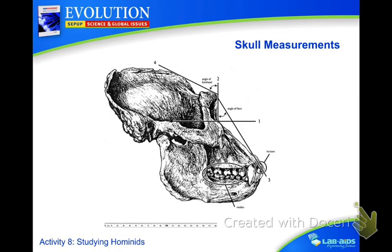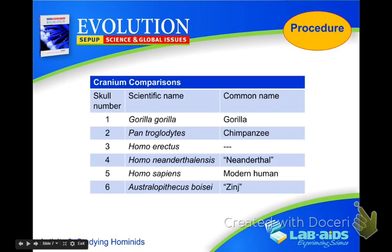Here are your actual answers. Number one is actually a gorilla. Number two is a chimpanzee. Number three is Homo erectus — remember, those are the ones that came before Homo sapiens. Number four would be your standard Neanderthal, the one that people think of as a caveman — that would be Homo neanderthalensis. There is no common name for Homo erectus; we just call them Homo erectus. For that specific gorilla, the genus is also the species name.